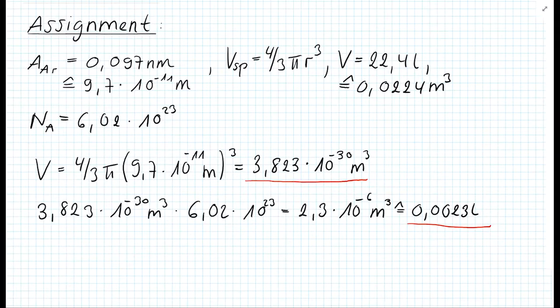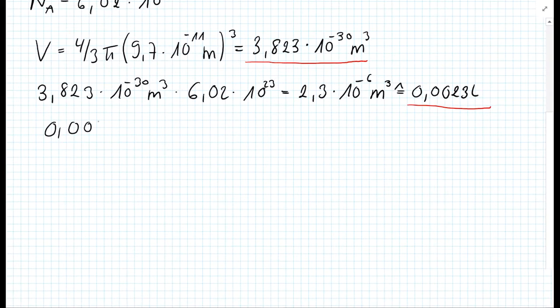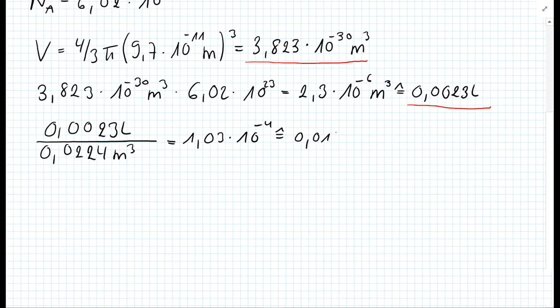In order to get the solution, we have to take the occupied volume that we calculated, 0.0023 liters, and divide it by the total gas volume of 1 mole, 0.0224 cubic meters. This equals 1.03 × 10⁻⁴, which are 0.01%. As you can see here, 0.01% of the total space is occupied by argon atoms. This concludes the assignment.